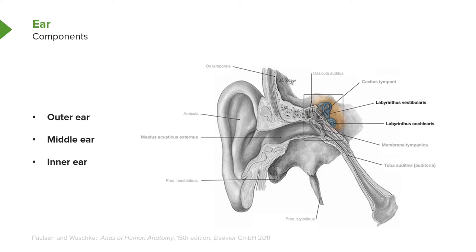Lastly, we have the inner ear. The inner ear is going to house the machinery, or the cellular architecture, that is responsible for the generation of action potentials that will allow us to perceive what we hear.